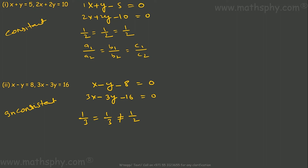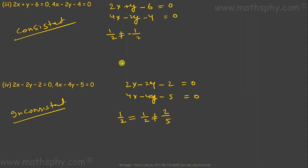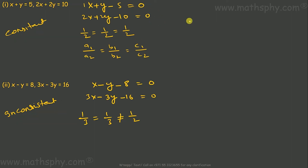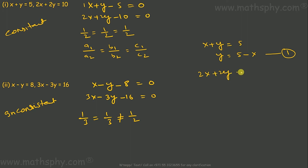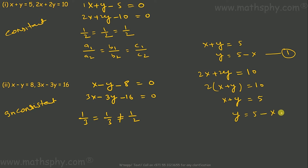We found the first pair and the third pair as consistent. Let's plot both of them into the graph and get the solution. For the first pair, x + y = 5, so y = 5 - x. That's the first equation. The second equation is 2x + 2y = 10 — dividing by 2 gives x + y = 5, so y = 5 - x. Both equations are the same.